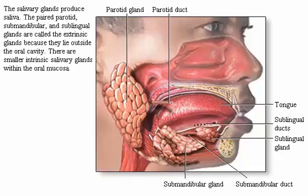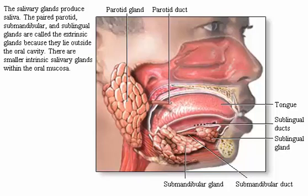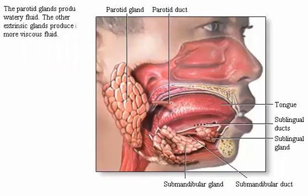The salivary glands produce saliva. The parotid, submandibular, and sublingual glands are called the extrinsic glands because they lie outside the oral cavity. There are smaller intrinsic salivary glands within the oral mucosa. The parotid glands contain only serous cells that produce a watery fluid containing enzymes, electrolytes, and a small amount of mucin. The other extrinsic glands contain both serous cells and mucous cells that produce a more viscous fluid.